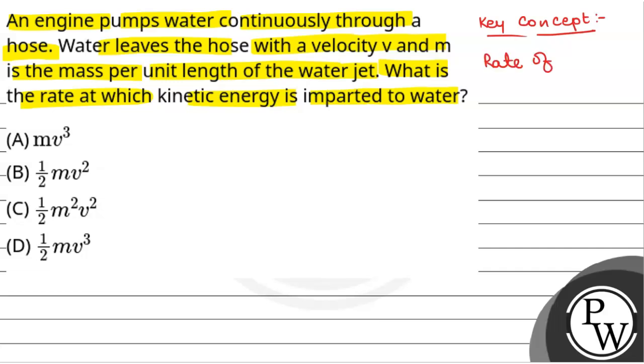rate of kinetic energy that will be equal to half into dm by dt into v squared, where dm by dt is rate of mass per second.